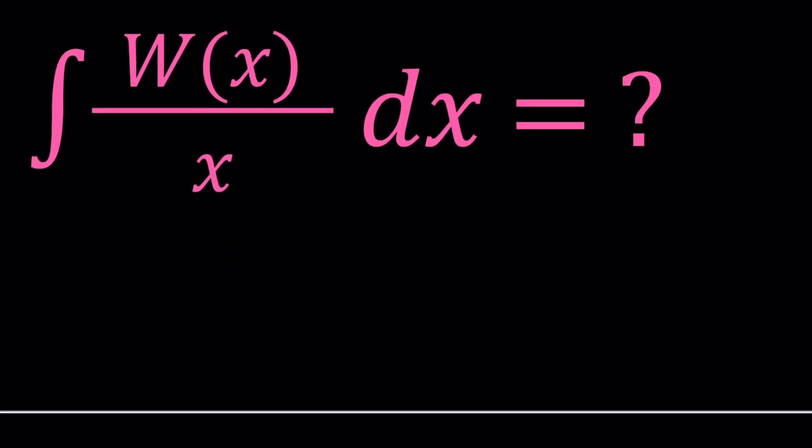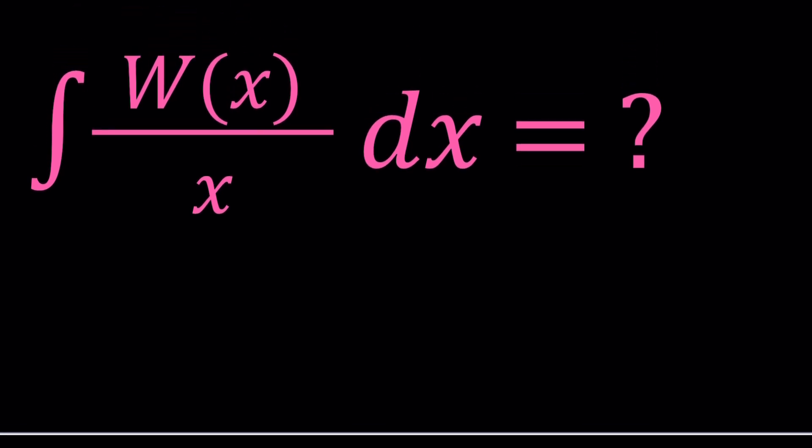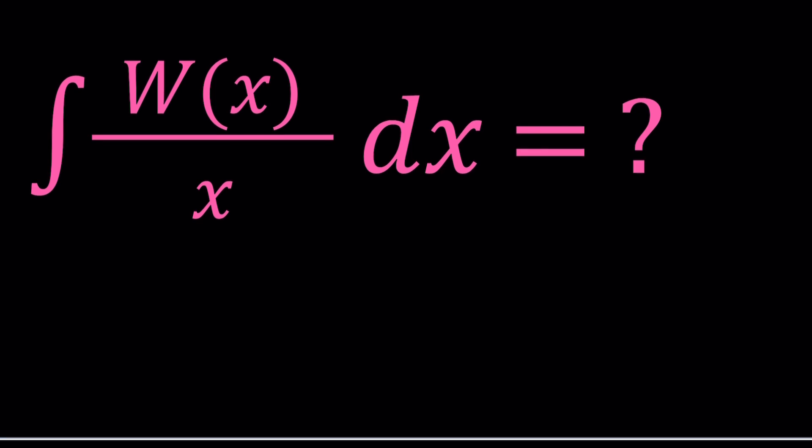So Lambert's W function is actually a special type of function, which is also called product log, and you can use that with Wolfram Alpha, one word, product log, parentheses, whatever your argument is.